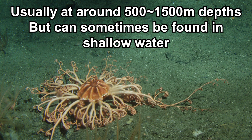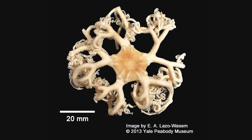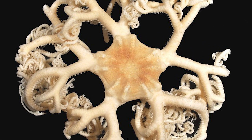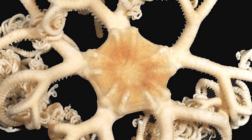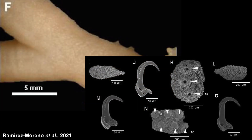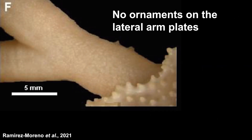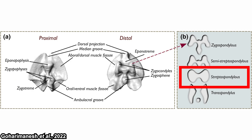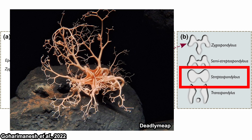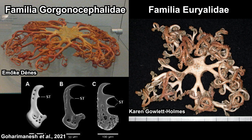As stated before, they are members of the Ophiuroidea class, which means they still have a central disc with pentaradial symmetry — especially apparent if you look at the central part. The order's characteristic is that their arm spines are located on the ventral sides only, with no ornamentation under lateral arm plates, and especially vertebrae with hourglass-shaped articulations that enable them to move their arms upwards.